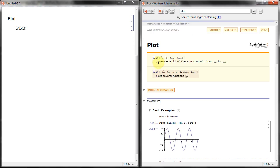Let's look at the syntax. So it says plot, open a square bracket. Then it says F, and then comma, X, Xmin to Xmax. And it tells you here, it generates a plot of F as a function of X, from Xmin to Xmax.